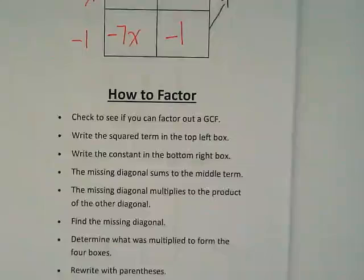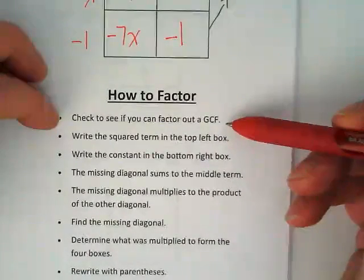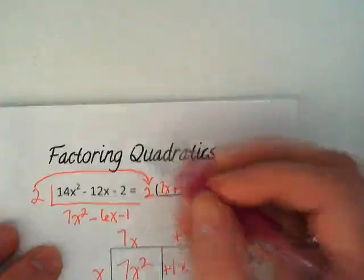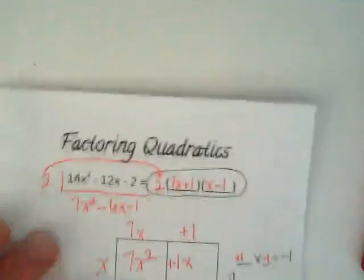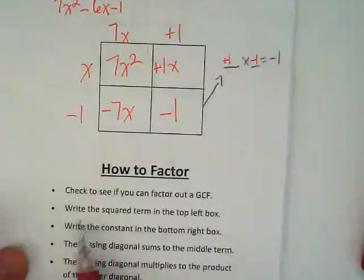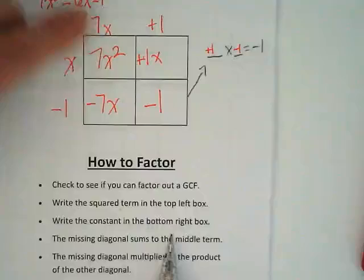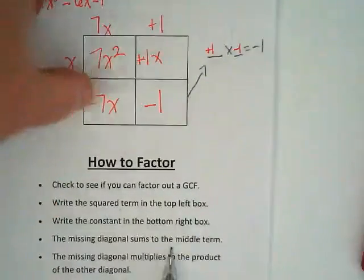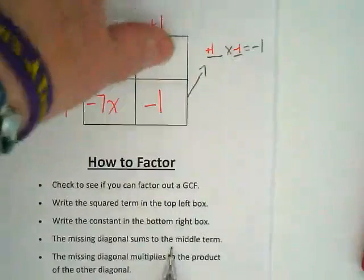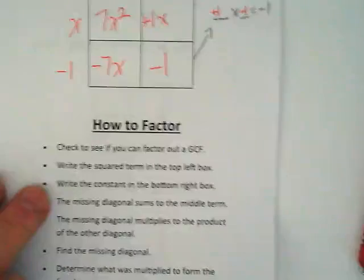I didn't read through all the directions because honestly, you've been doing a lot of these. Check to see if we can factor out a GCF. That was the first thing we did. And by the way, the answer with this is this whole thing. The 2 in front of it stays with it. We would write the squared term in the top left box, which we did. We would write the constant in the bottom right box, which is the negative 1, which we did. The missing diagonal sums to the middle term. We have to just keep that in mind as we start working with it. We know how to do those parts. It's just a little different here, so I'm going to do some more with you.